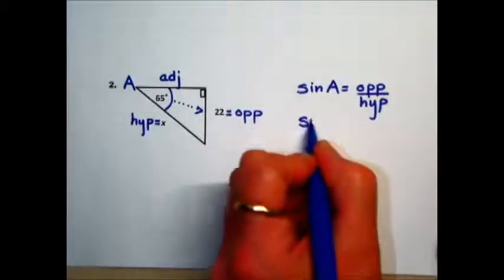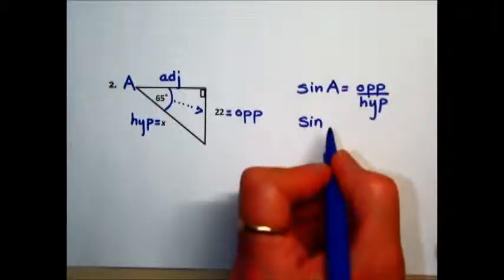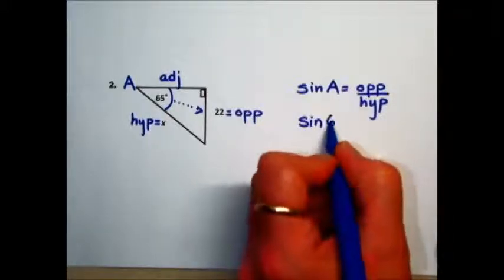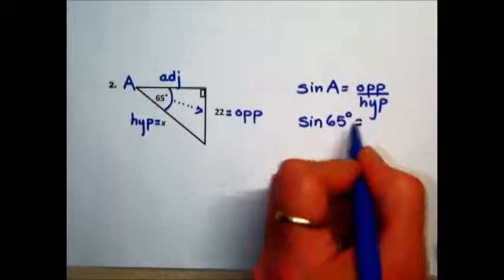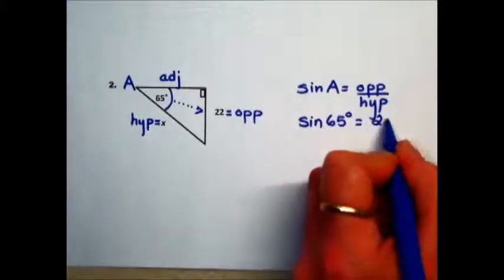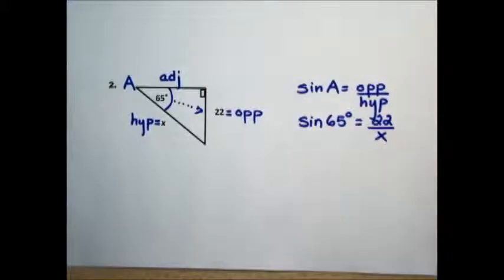We'll next plug in the values. Given that we know, we know the angle measurement, we know the opposite is 22, hypotenuse is the variable that we're looking for. We'll use the x that's given.